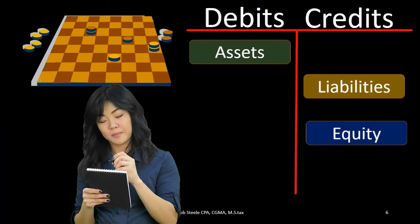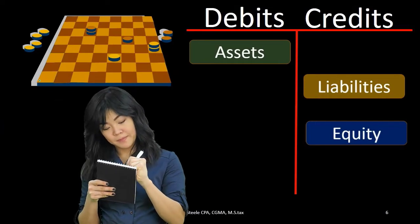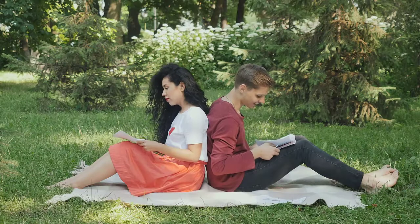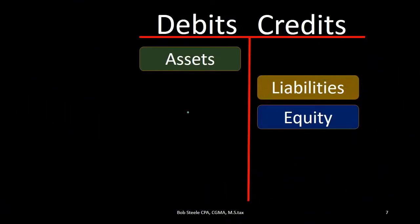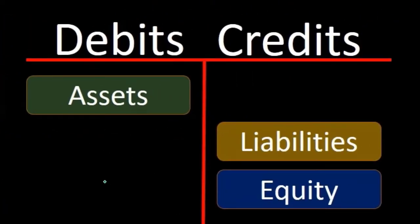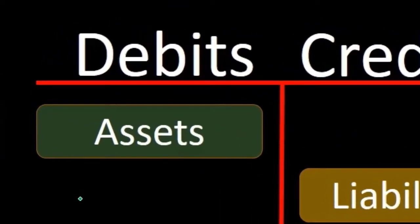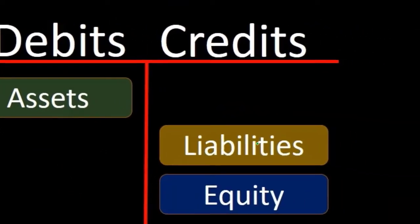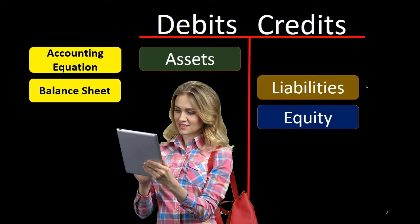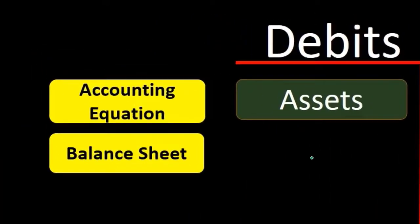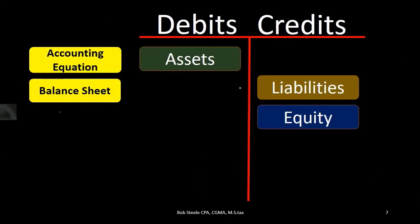Have a cheat sheet in front of you as you work through transactions, and you'll start to memorize this if you apply the proper thought process. The accounting equation — assets equal liabilities plus equity — can be represented as assets being on the left side of the T account, or debits, and liabilities and equity on the right side, or credits. This is also the balance sheet: assets equal liabilities plus equity.